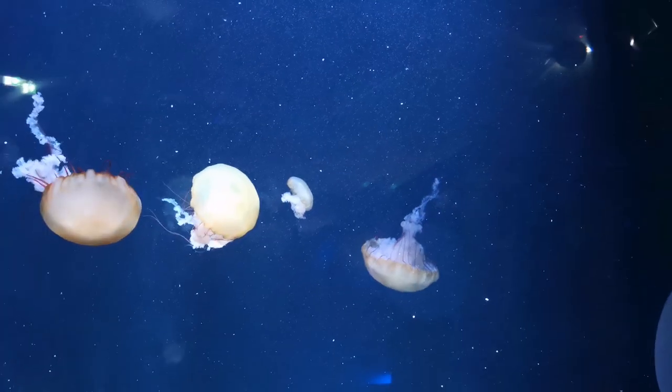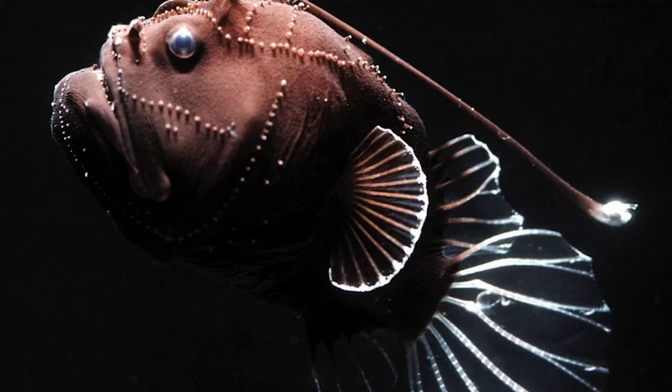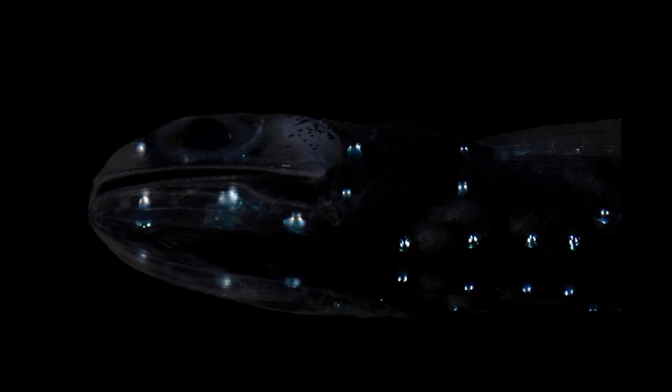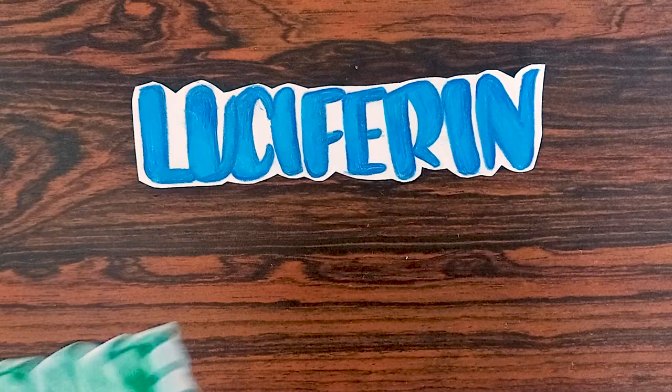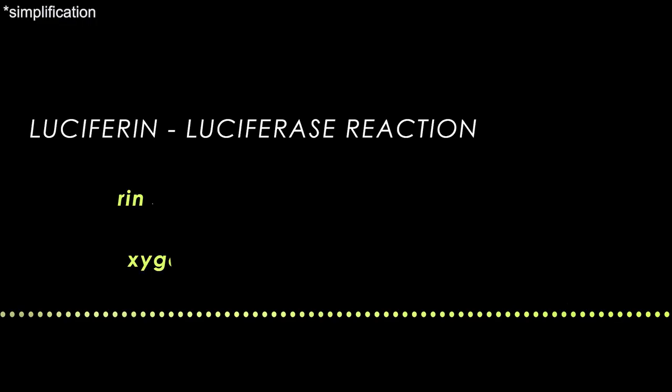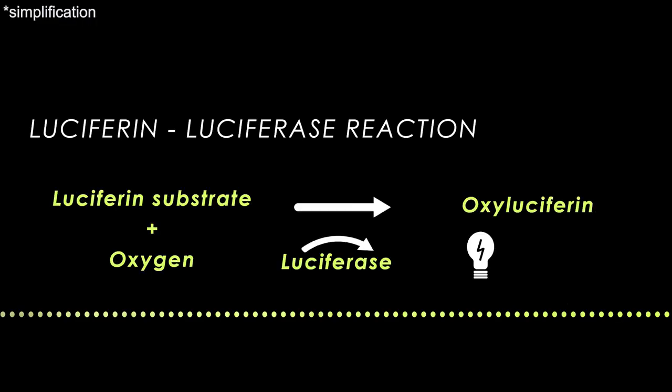For some species, those cells are located in a special light organ called a photophore. The reaction involves two molecules, luciferin and luciferase. When they react with oxygen, it produces light.